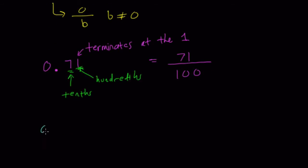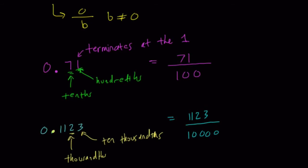All terminating decimals work this way. For 0.7172, we look at our place value: tenths, hundredths, thousandths, ten thousandths. So this would equal 7172/10000. Any decimal that terminates is rational—we can find a way to write them as simple fractions.